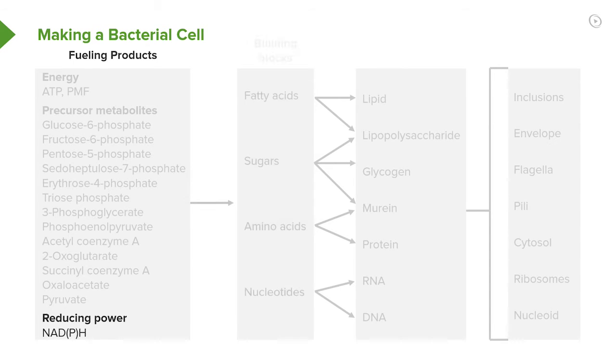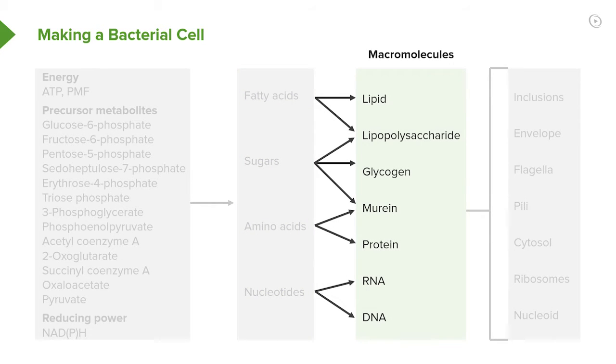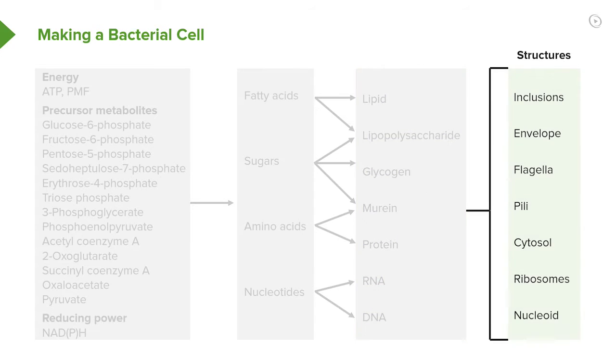These fueling products can be used to make the building blocks that are needed, like fatty acids for membranes, sugars, amino acids, and nucleotides for DNA. Each of these then can be polymerized to make lipids, lipopolysaccharides, glycogen, murine, protein, RNA, or DNA. And these finally get built into bigger structures like inclusions, the envelopes that are in cell walls, flagella pili, the actual cytosol itself, ribosomes, and the nucleoid.